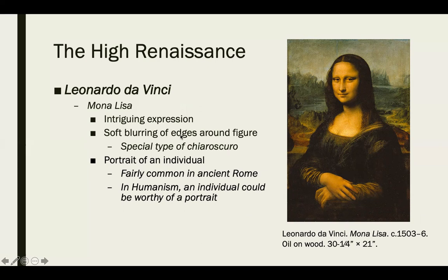The Mona Lisa has a very intriguing expression, soft blurring of the edges around the figure, and Leonardo uses chiaroscuro, with light coming from one side of the image. One thing to note: the portrait of an individual was common in ancient Rome, but humanism meant that any individual — not just royalty — could be worthy of a portrait. Similar to Ukiyo-e in Japanese art, there's a focus on the individual and everyday life.